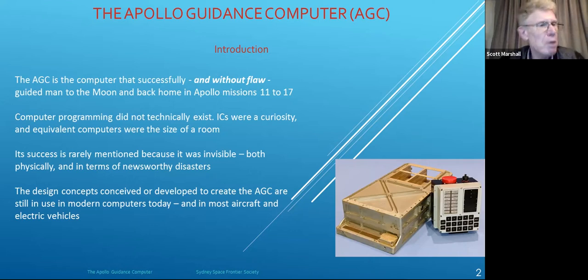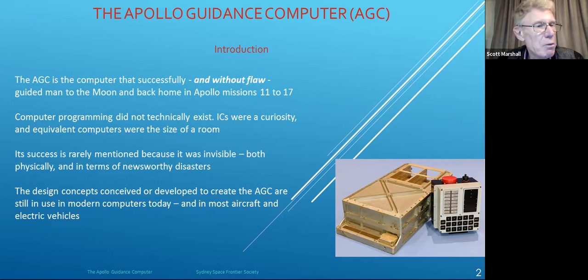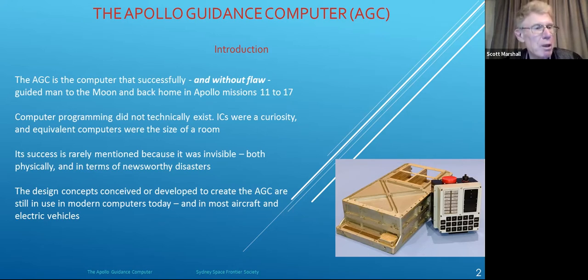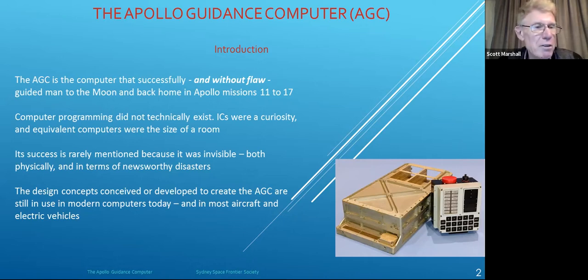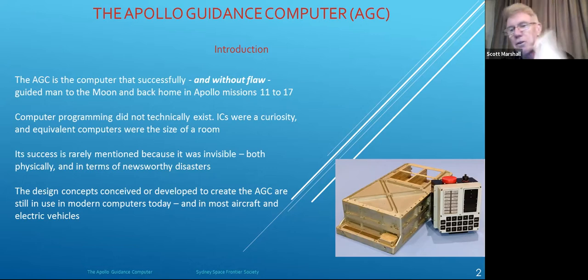When Apollo 11 touched down on the Sea of Tranquility on July 20, 1969, it was more than a triumph of the human spirit — it was also the story of a cybernetic wonder called the Apollo Guidance Computer, which helped the Apollo astronauts safely navigate to the moon and back. It was a computer so advanced for its time that the engineers who created it said they probably wouldn't have tried to do so if they had known what they were getting themselves into.